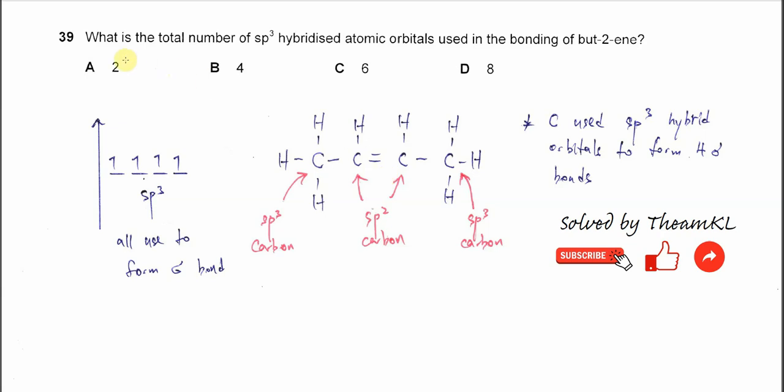Question 39: What is the total number of sp3 hybridized atomic orbitals used in the bonding of but-2-ene? First, you need to know what sp3 hybridized orbitals means. For carbons which form four sigma bonds...